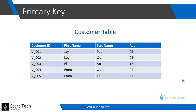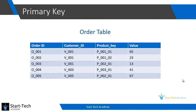Suppose I own a grocery store and I have a unique customer ID for each customer visiting my store. My customer ID can be used as a primary key of my customer table. And suppose I am recording each order of these customers in my order table and assigning an order ID to uniquely identify each order. My order ID can be used as a primary key for my order table.